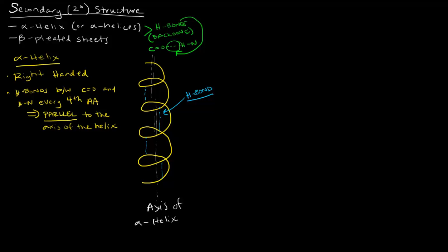One more thing imperative to keep in mind is what are the R groups doing? Where are the side chains in this structure? The R groups of the amino acids are all pointing outwards. They're pointing out of the helix. If you conduct a Google image search, you'll find much better images of these helices, but this drawing gives you an idea of what's going on with an alpha helix.